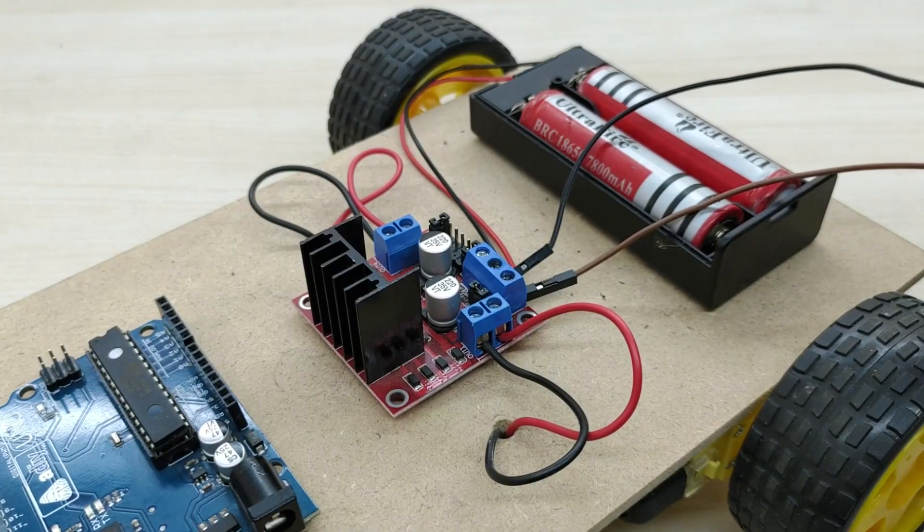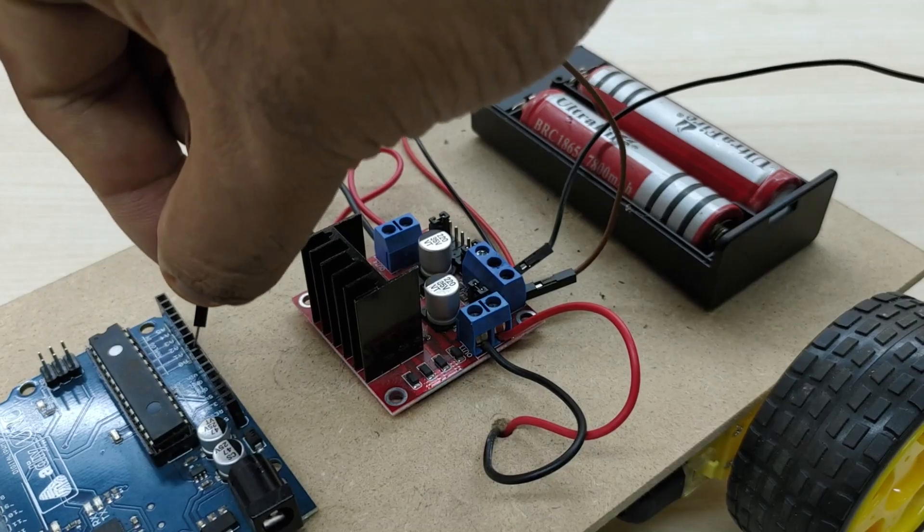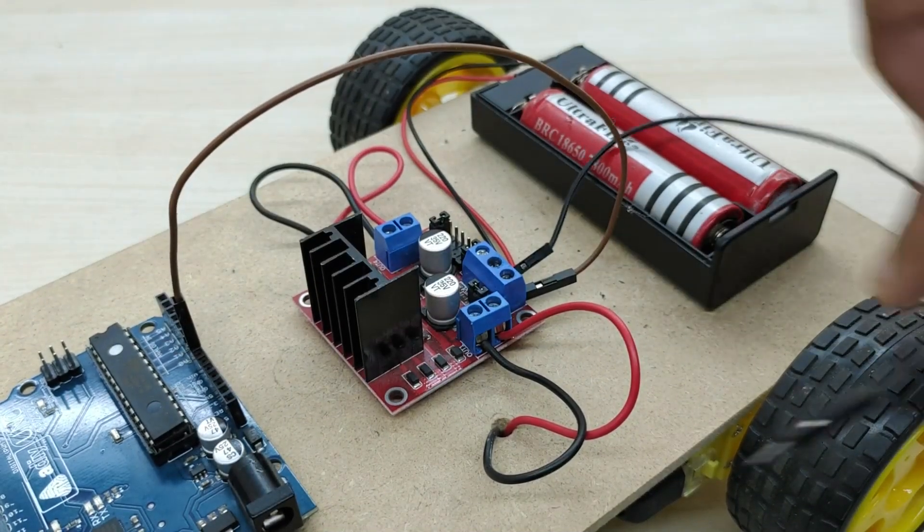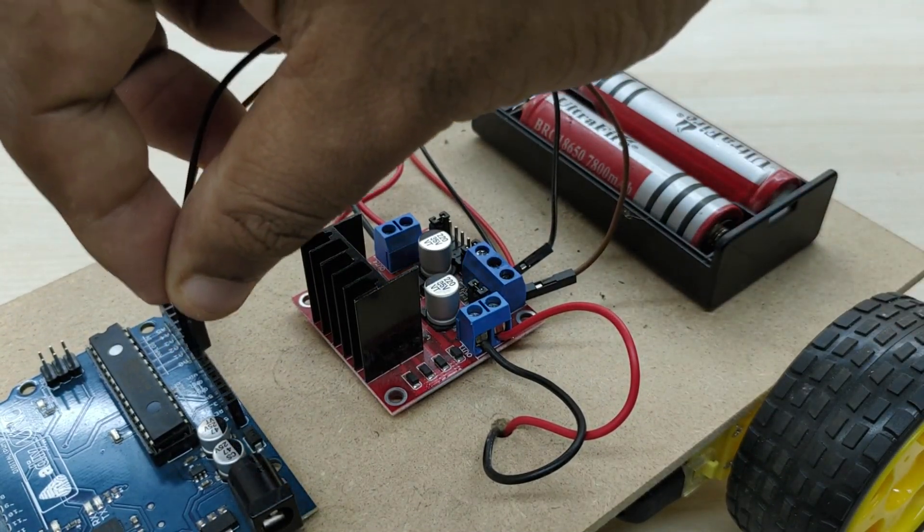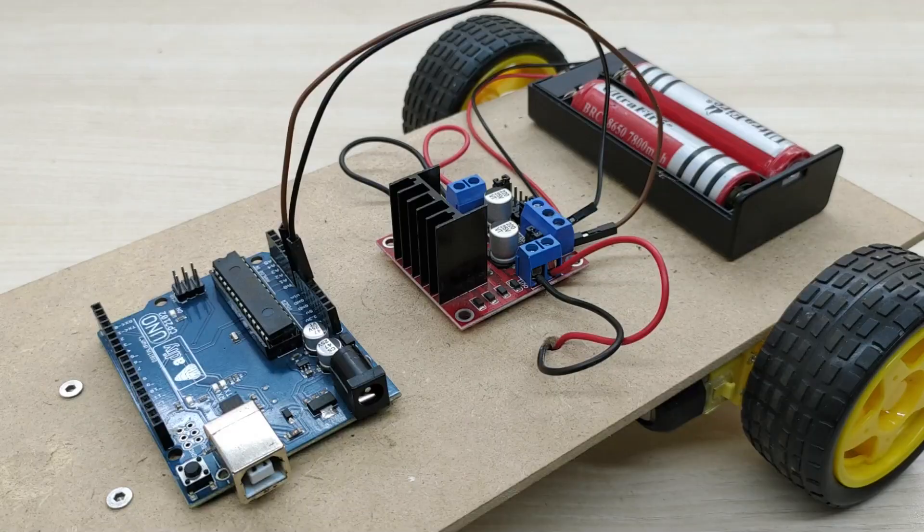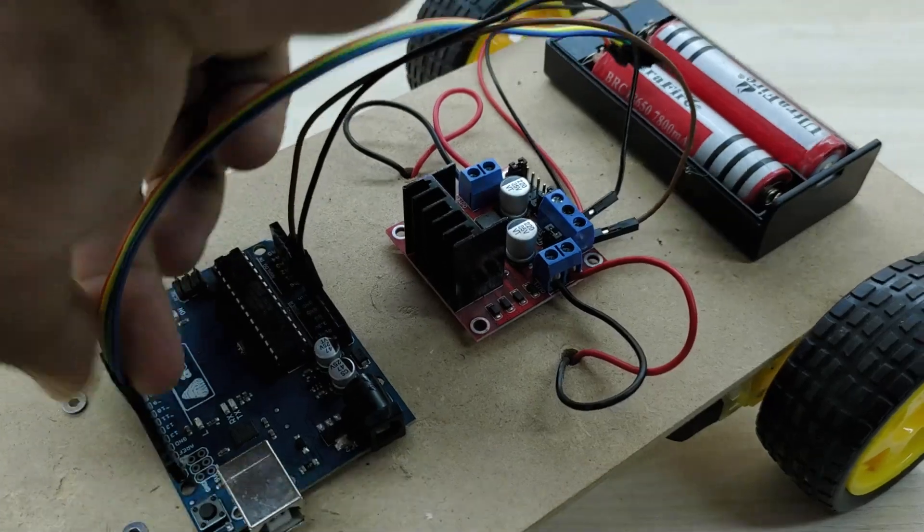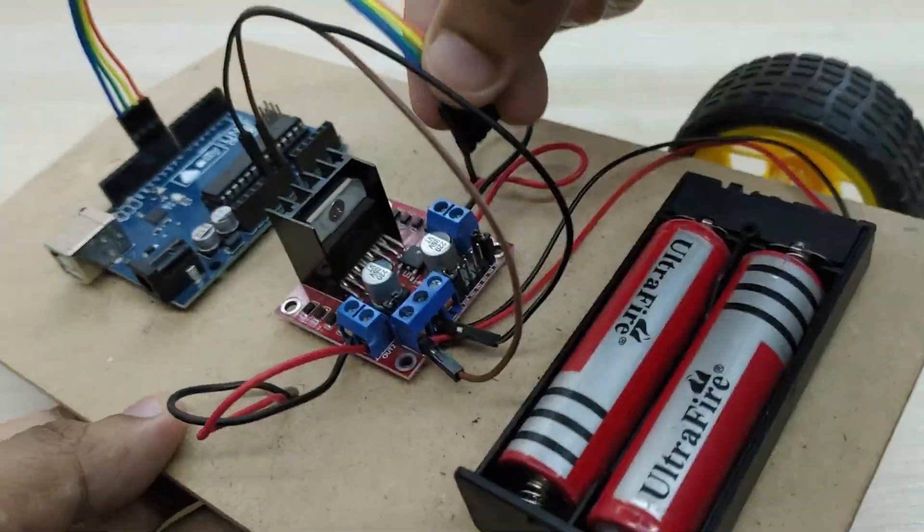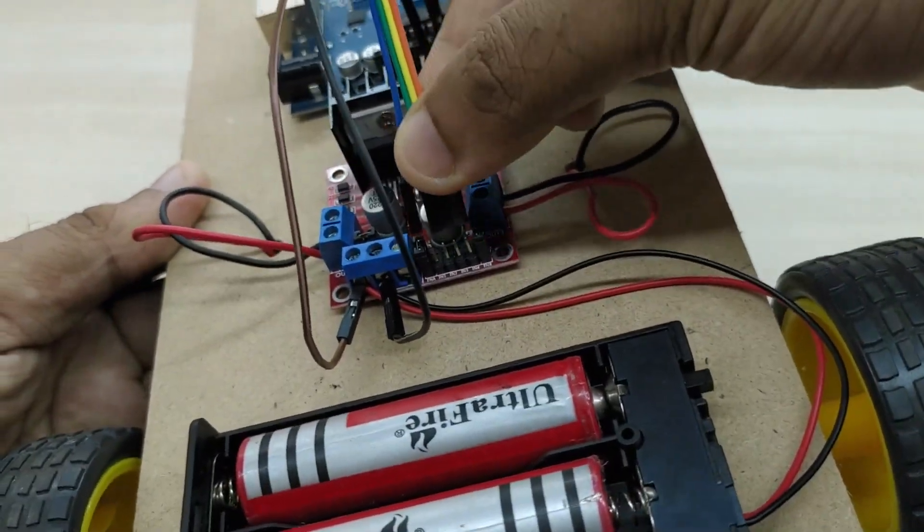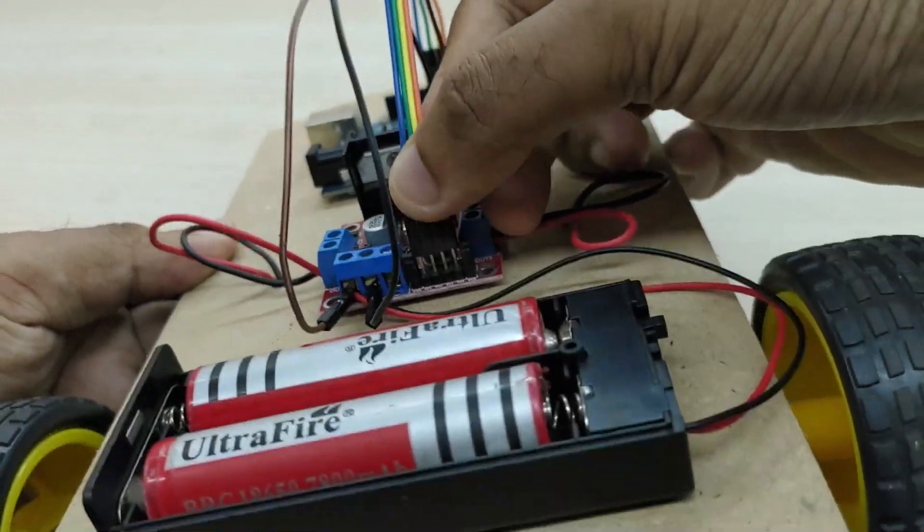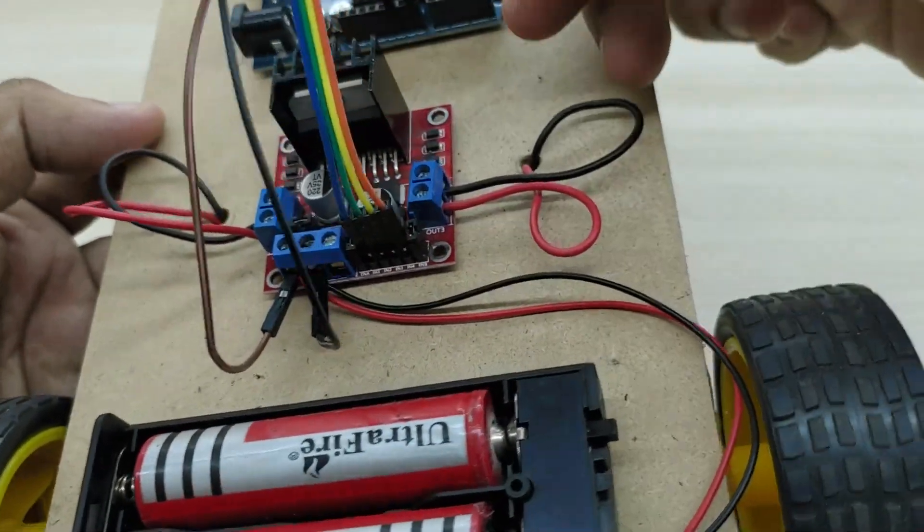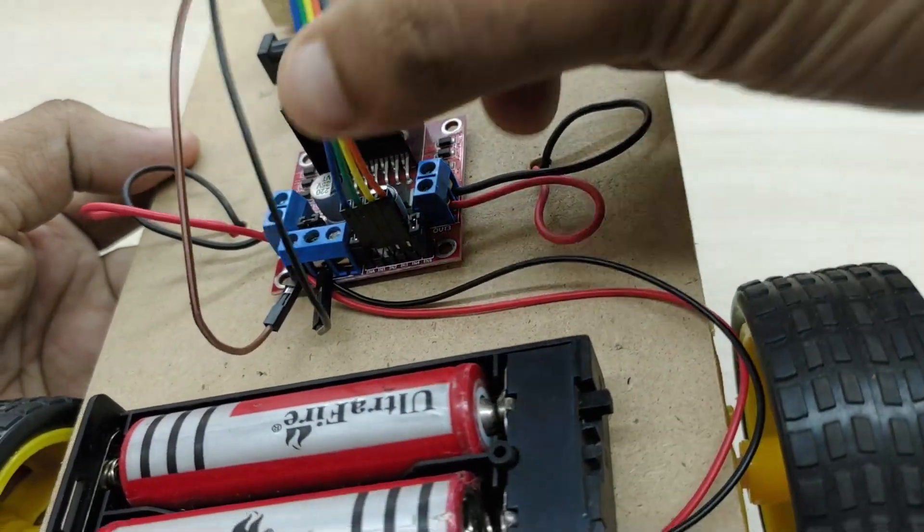Now connect the jumper wire connected to the positive battery terminal to Vin pin of the Arduino board. Connect the other jumper wire to ground pin of the Arduino board. Take four jumper wires and connect one end to pin numbers 8, 9, 10 and 11 of Arduino board. Connect the other end of the jumper wires to the four motor control pins of the motor driver board in the same order, as shown.